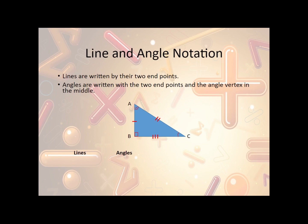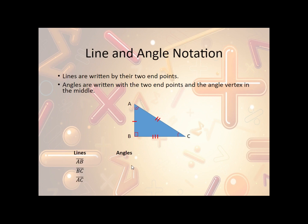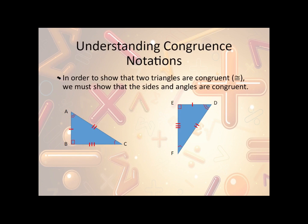We need to be able to label each part of a triangle. Line segments are written by their two endpoints — for instance, AB, BC, and AC or CA. The order can be reversed; BA or CB also works. Angles are labeled by two endpoints with the vertex in the middle. For instance, angle ABC or CBA has B in the middle. Angle ACB represents the angle at vertex C, and angle BAC represents the angle at vertex A.